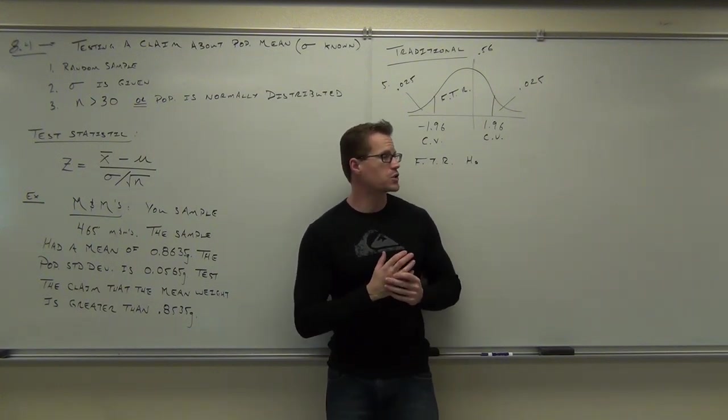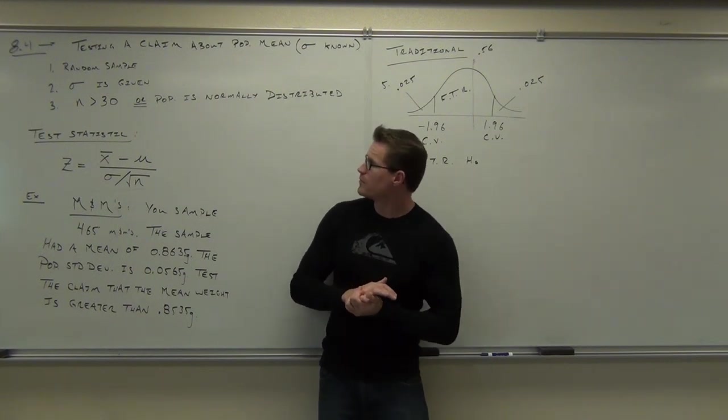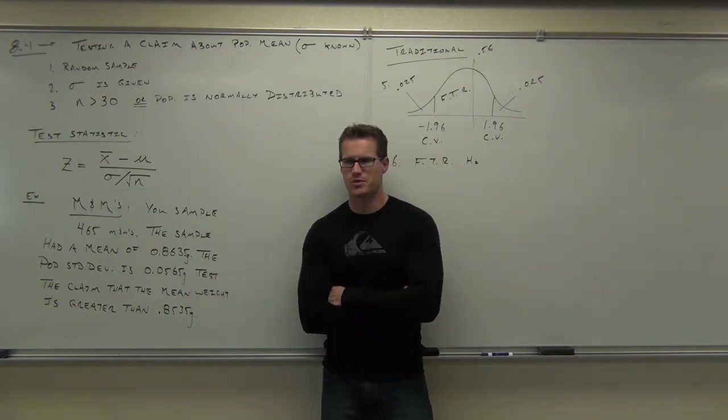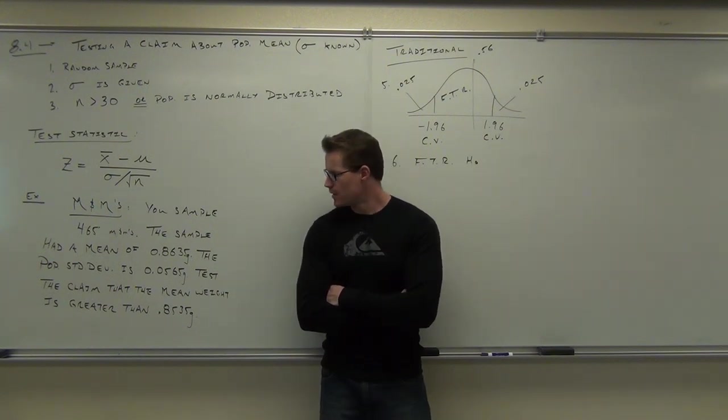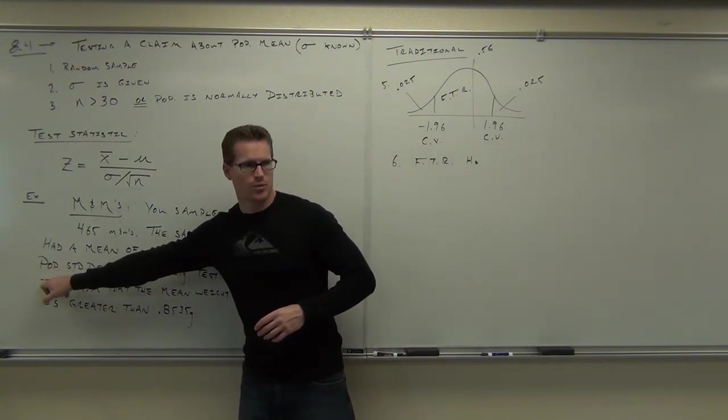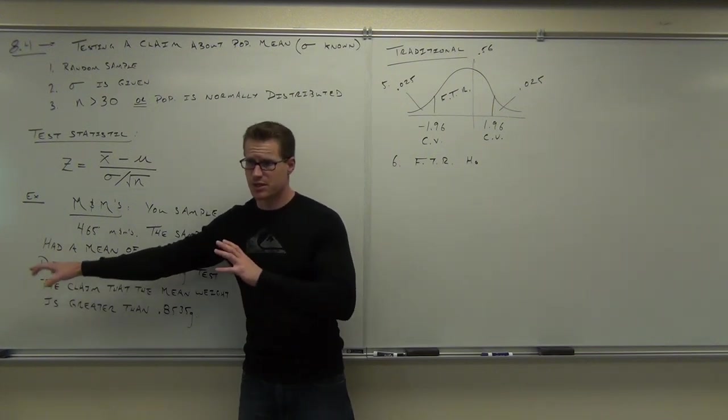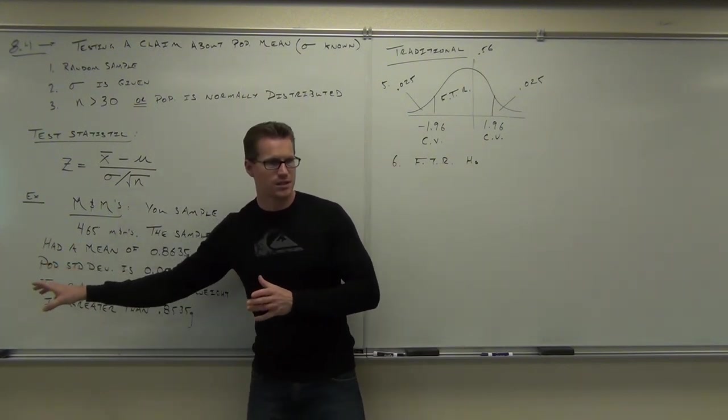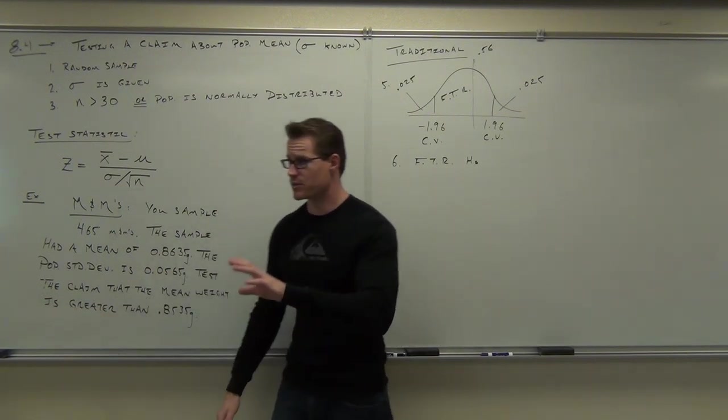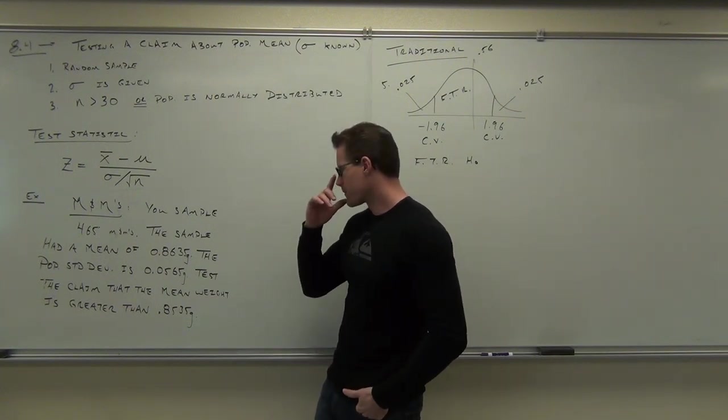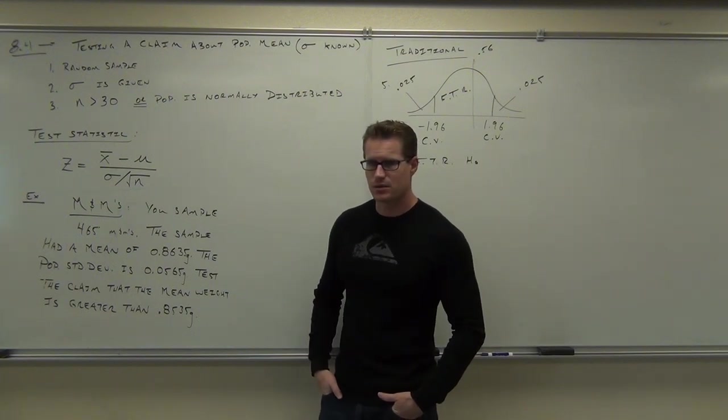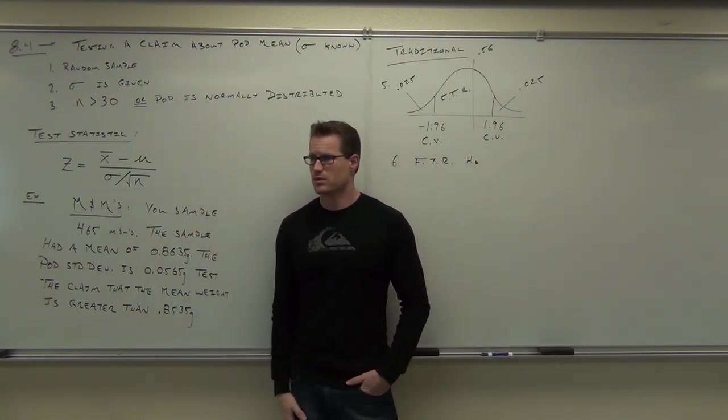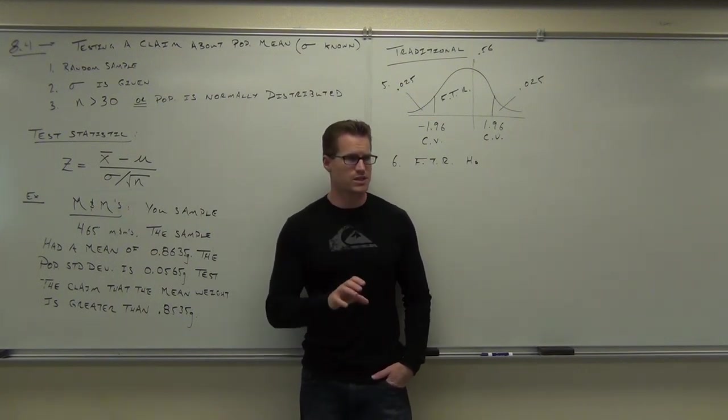Firstly, I want you to check requirements. We're going to assume that the sample is random. Secondly, do we have sigma anywhere? Standard deviation - that word right there, population. If that word was not here, population standard deviation, could you use this? We'd be in the next section. But if this was not there, you could not use a z test statistic. Are you all very clear on that? Also, our third condition - is that met? Yes. It doesn't say anything about the population being normally distributed, but does that matter? No. What's our sample size? 465. Way more than enough. So we have all our conditions met to use a z test statistic.